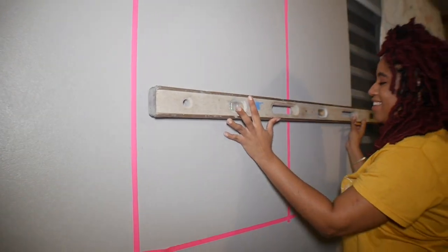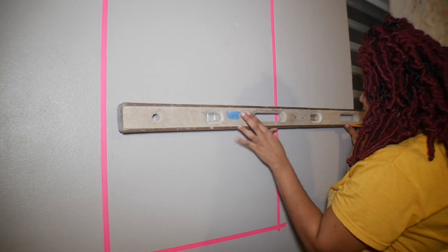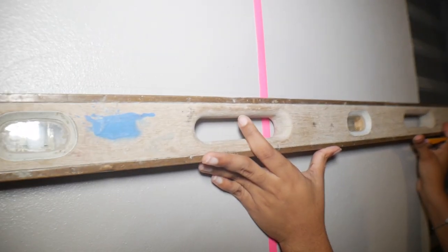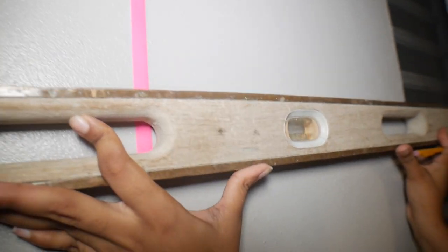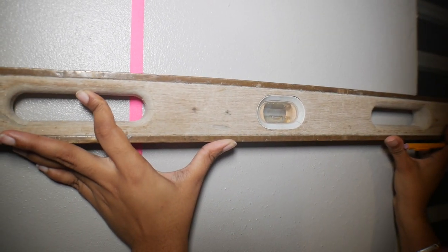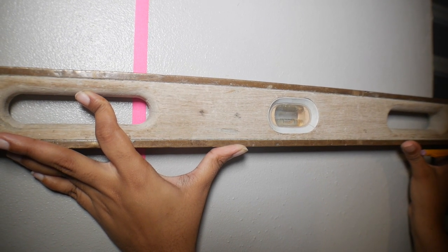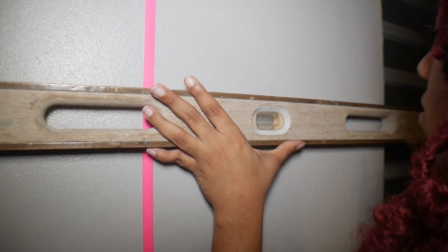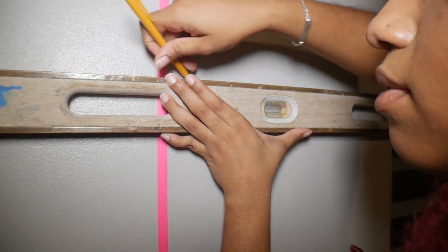Because I'm placing it directly next to a window, I decided to find the center point of my window to center it between the top of the window and the windowsill. After I found the center point of my window, I made a line with a pencil and now I'm taking this level and making a straight line across the wall.